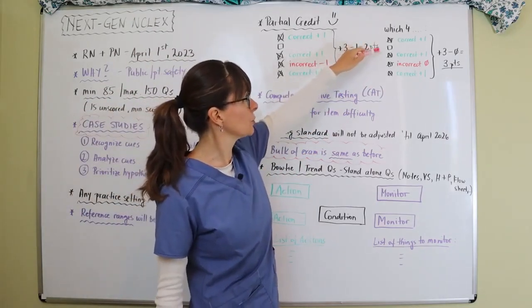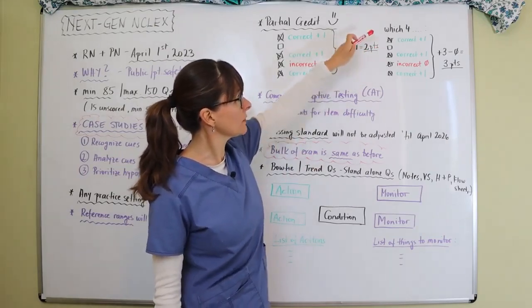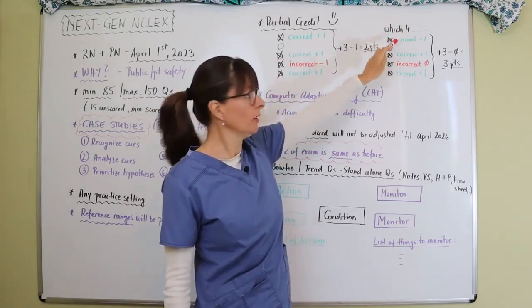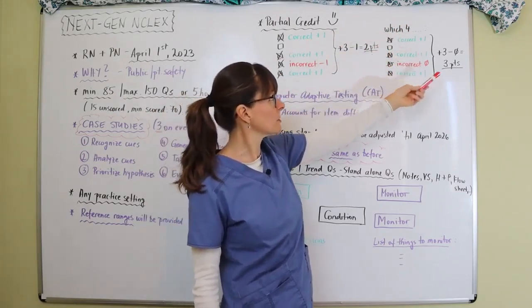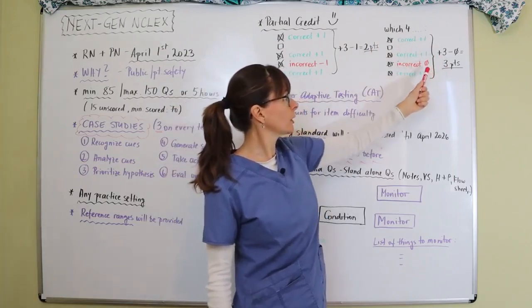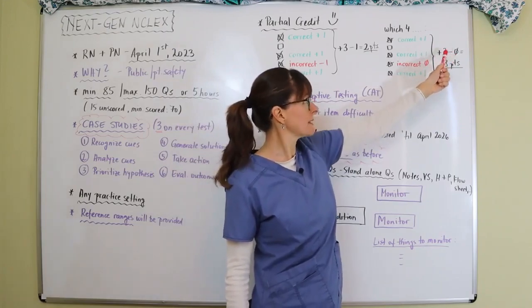So now you know that only four of the five here are correct. And again, let's say you choose three that are correct and one that's incorrect. If there is a specific number given that they are looking for, then the score is a little bit different.